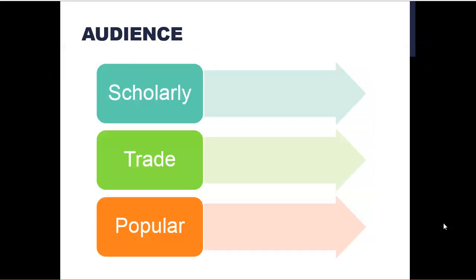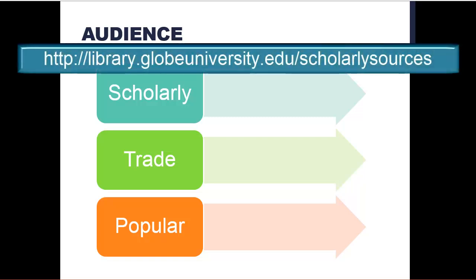Okay, about intended audiences, there are three main categories that sources fall into. These are categories that you probably hear about in other classes, too, when instructors ask you to find scholarly sources, for example. You can find more in-depth explanations of this at Library Connect.